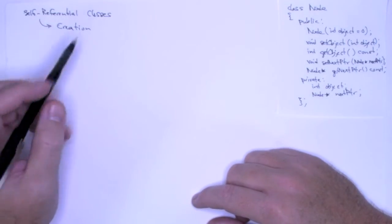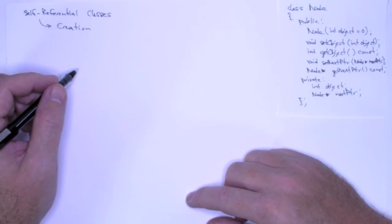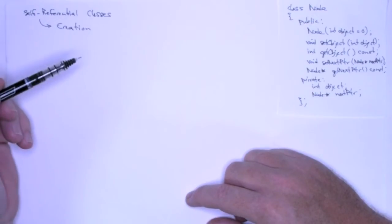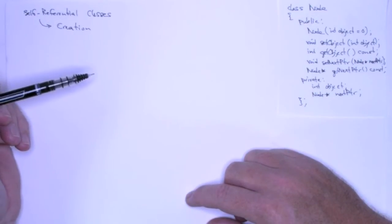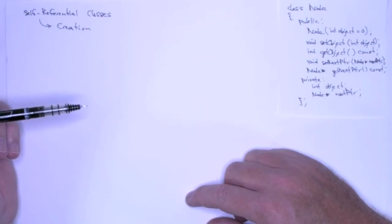Okay, following up on the previous lecture on self-referential classes where we created a linked list dynamically, and then we traversed it in what I would call a brute force manner.